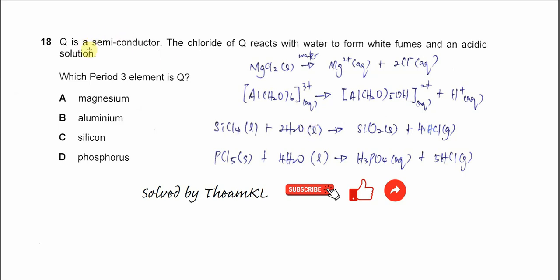Question 18: Q is a semiconductor. From this statement we already know Q is silicon. Let's go through the question. The chloride of Q reacts with water to form white fumes and acidic solution. Which Period 3 element is Q?